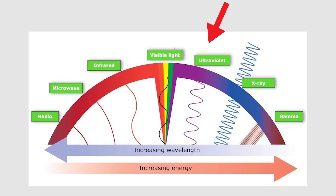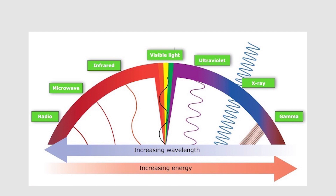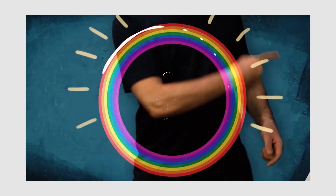Ultraviolet rays are shorter than violet rays, and X-rays are even shorter than ultraviolet rays. Gamma radiation normally occurs at the extreme end of this side of the rainbow. At the other end of the spectrum is infrared radiation and radio waves. By the way, a rainbow is actually a complete circle — it's just that from the ground we only see a part of it.